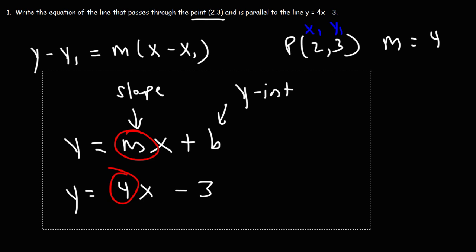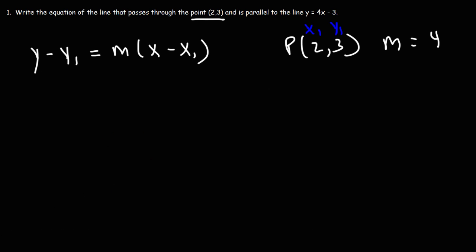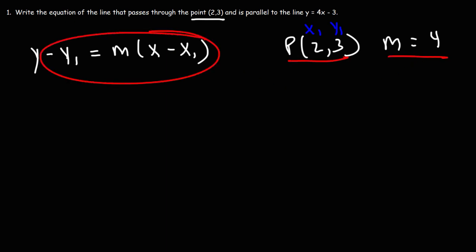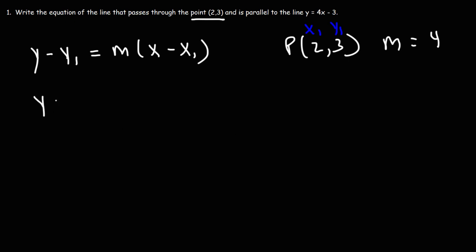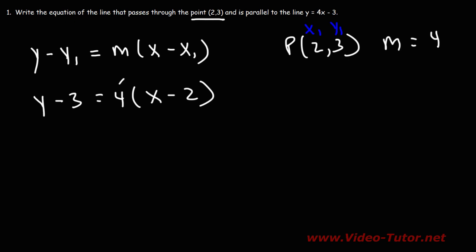Parallel lines have the same slope. Now that we have a point and a slope, we can use the point-slope formula to write the equation. Let's replace y1 with 3, m with 4, and x1 with 2. This gives us the equation in point-slope form. To get slope-intercept form, let's solve for y by distributing the 4: 4 times x is 4x, and 4 times negative 2 is negative 8.